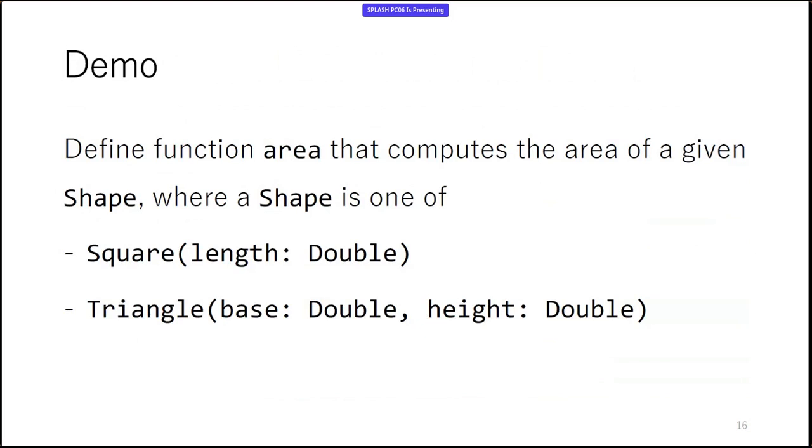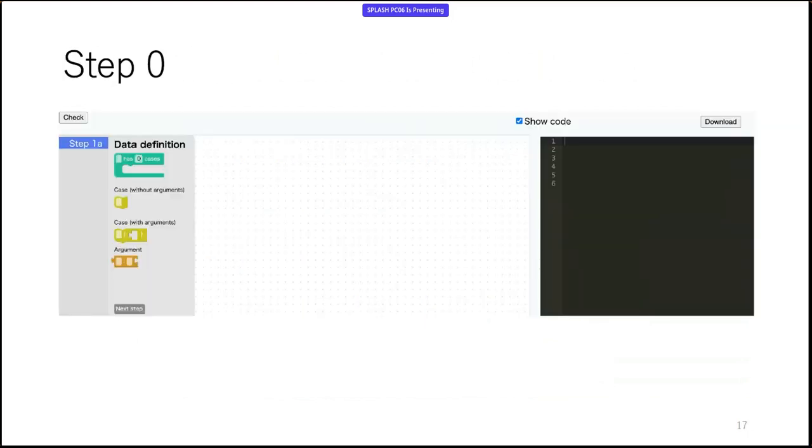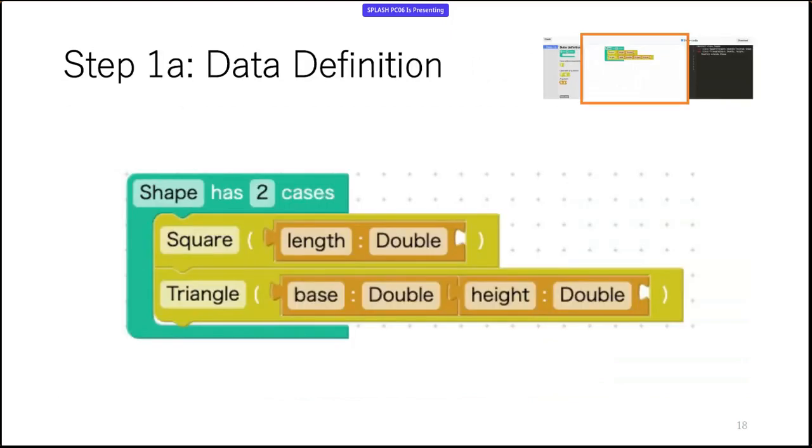Let me show you how we design programs in MEO using a concrete example. Suppose we are given a problem to define a function called area that computes the area of a given shape, which is either a square or a triangle. We are going to use the Scala syntax for the generated code. This is what MEO looks like when we launch it. It has a block panel on the left, a workspace in the middle, and an editor on the right.